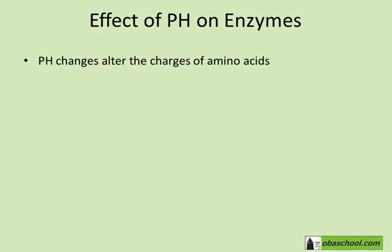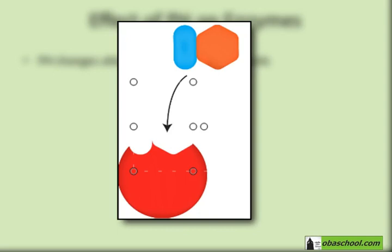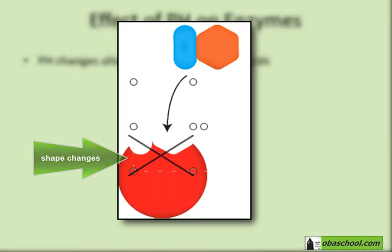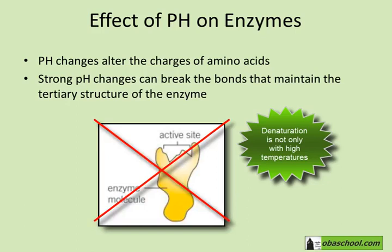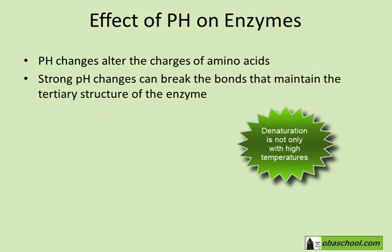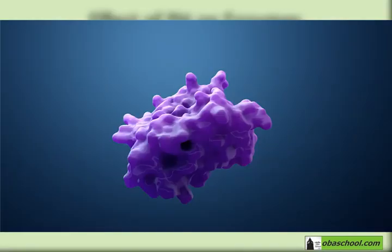Suddenly, the shape of the active site is changed — the active site is no longer stabilized. And besides that, you can even denature enzymes by changing the pH very drastically from the optimal, breaking the entire tertiary structure of the enzyme. And as we said with temperature, denaturation means losing the enzyme forever.